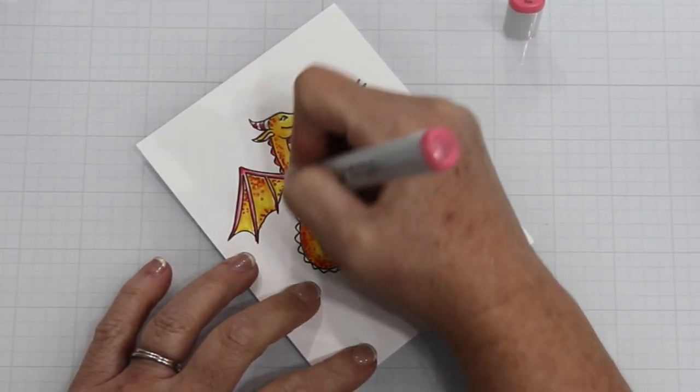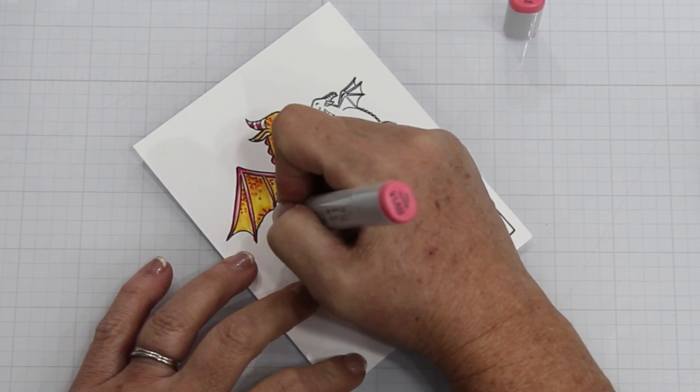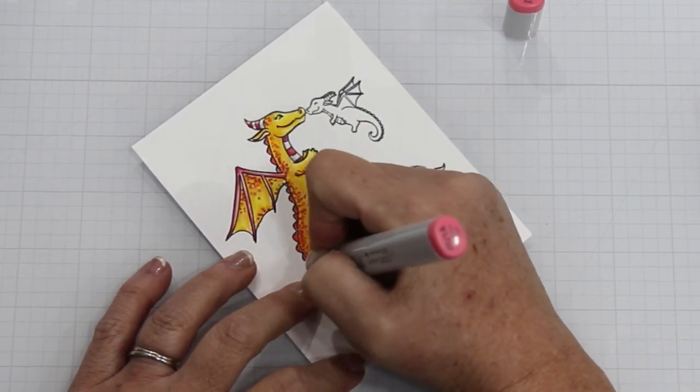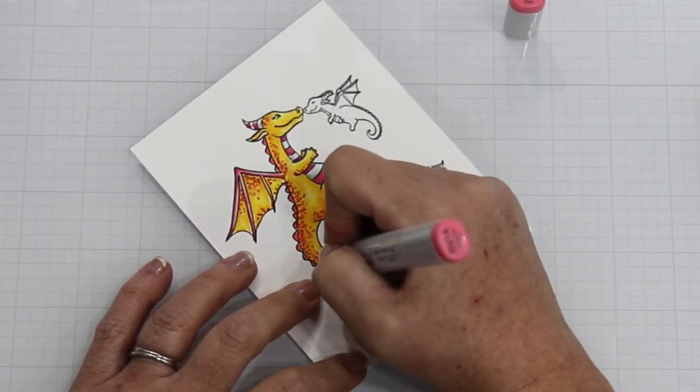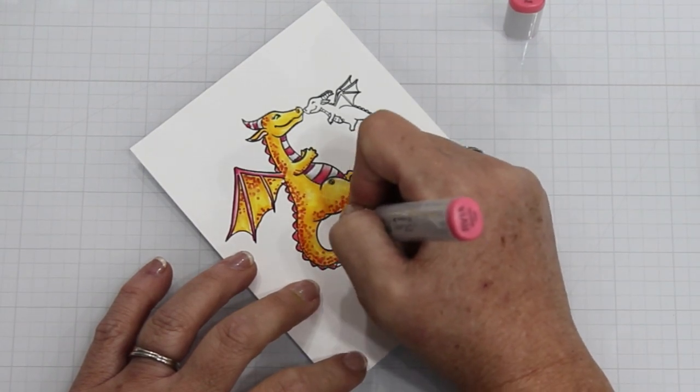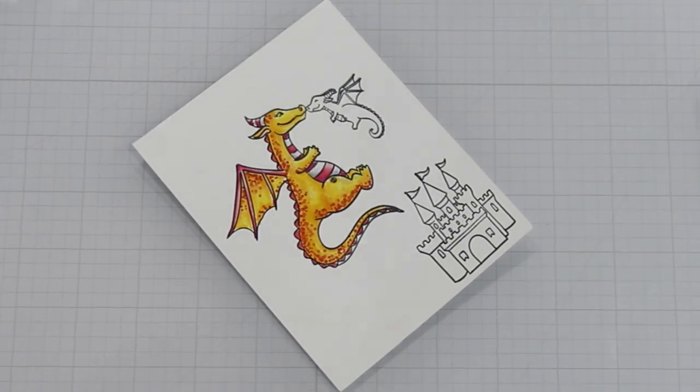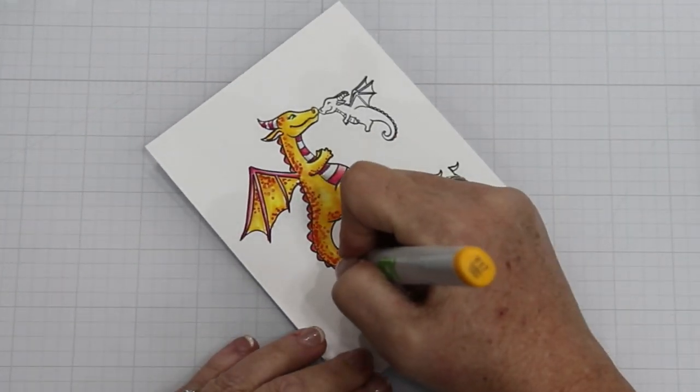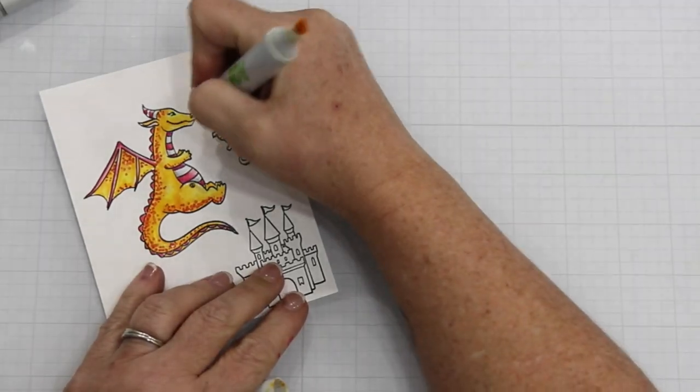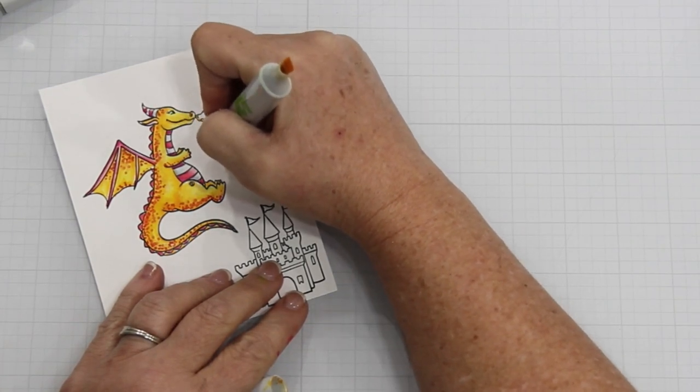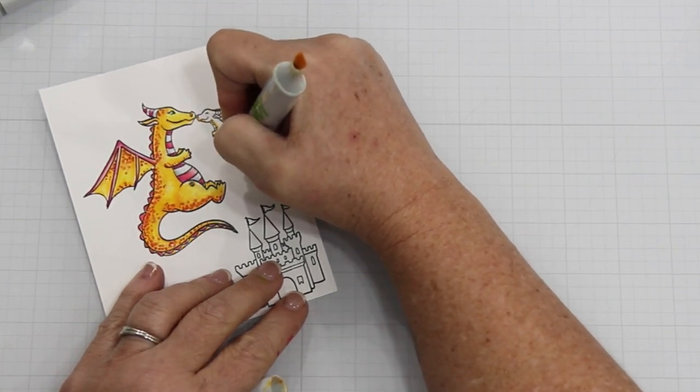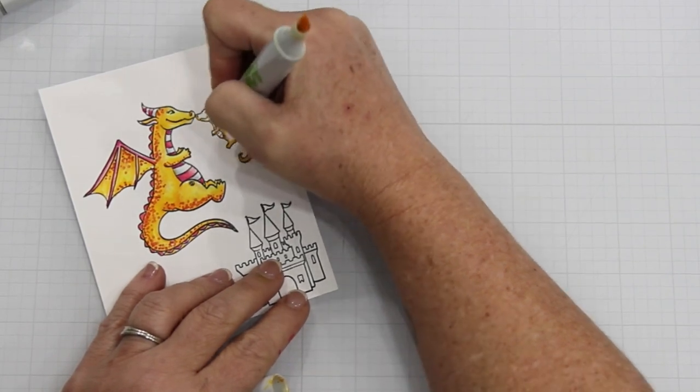Now, just to be transparent with you, I only sped up my coloring by two times for the Mama Dragon. But for the Baby Dragon, I do speed it up by four times, just because it's kind of a redundant coloring. And for the spine, like where the bumps are, I just used that RV17 because I didn't think that there was enough room to get any dimension.